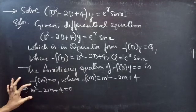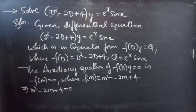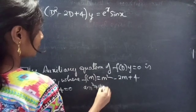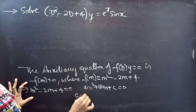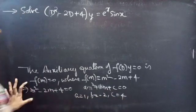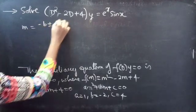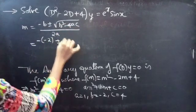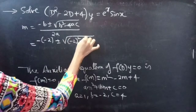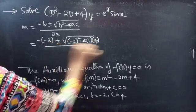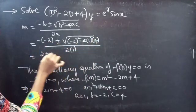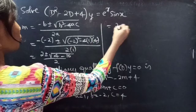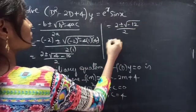Now we will find the roots of this equation using the quadratic formula. Compare this equation with am² + bm + c = 0. Then we get a equals 1, b equals minus 2, and c equals 4. Using the quadratic formula, minus b plus or minus square root of b squared minus 4ac, divided by 2a, we get 2 plus or minus square root of 4 minus 16, divided by 2, which equals 2 plus or minus square root of minus 12, divided by 2.